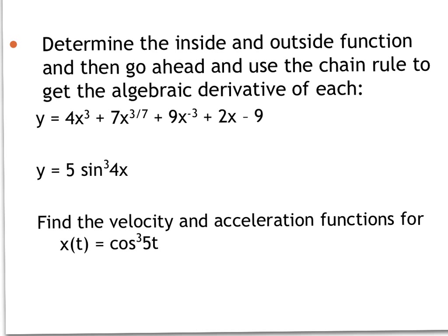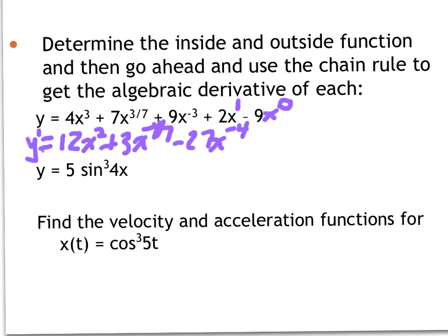Now we're going to find the derivative of these two functions. Be careful — even though the directions say power rule, the power rule doesn't actually apply to the first problem directly, because the first problem is a bunch of separate power rule problems. Each term has an exponent, even 2x to the first, and the last term is 9x to the 0. So the derivative is 12x squared, then 3x to the negative 4/7ths — since 3/7 times 7 is 3 and subtracting 1 from 3/7 gives negative 4/7 — minus 27x to the negative 4, plus 2.